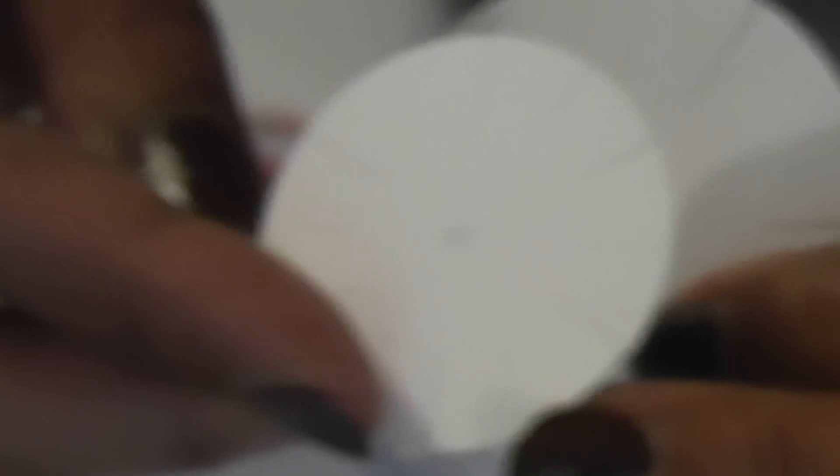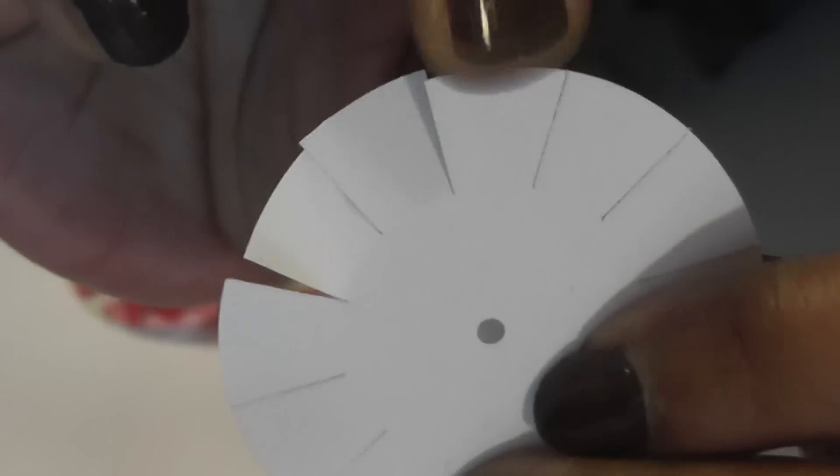So this is what the flowers look like when you cut them out. That's the large one, the medium one, and the small one. And as you can see, it cuts the slits for you.